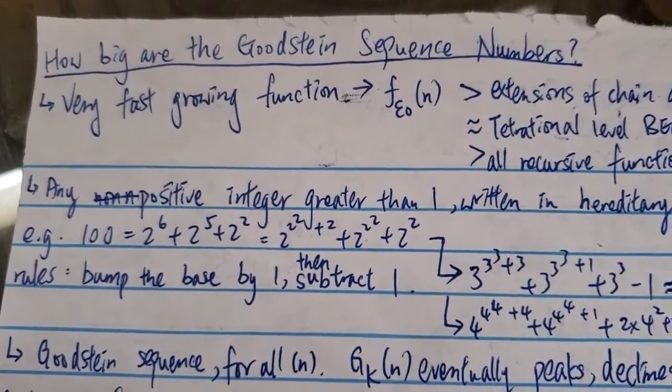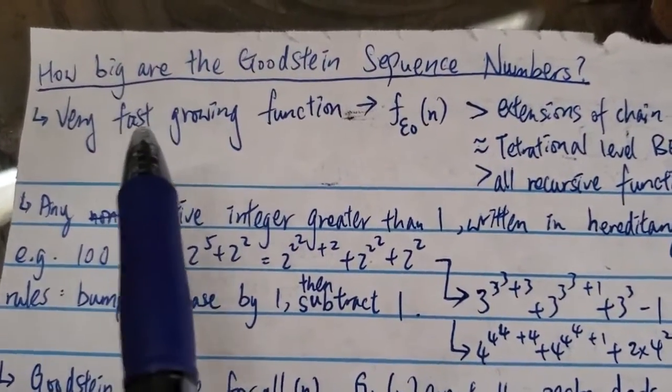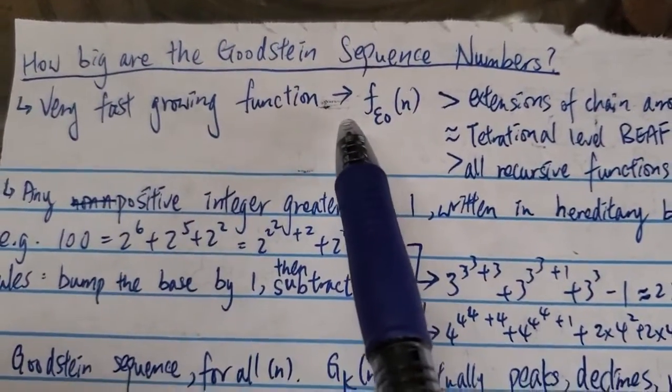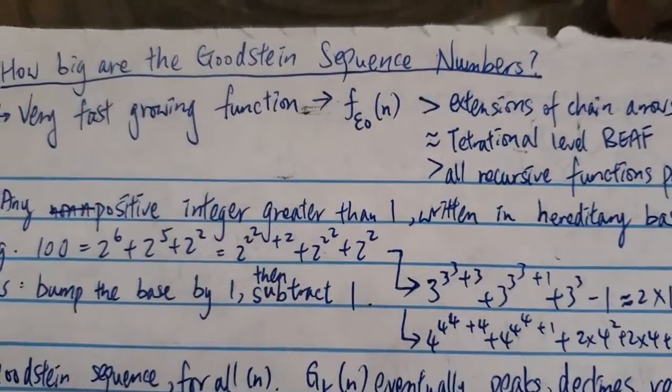So first of all, the Goodstein sequence, probably a lot of you have heard of it already, is a very fast-growing function that has a growth rate of around f of epsilon naught n, which is pretty fast-growing.